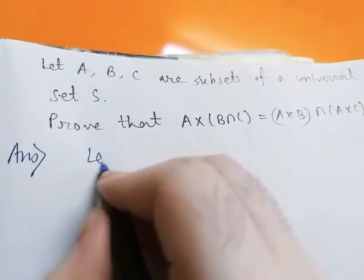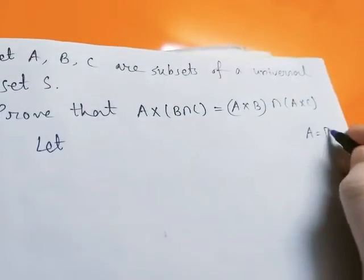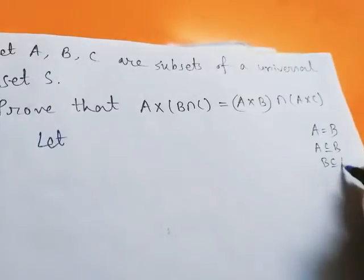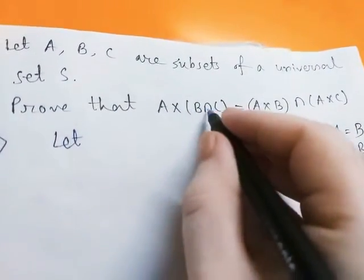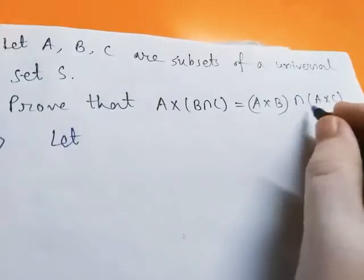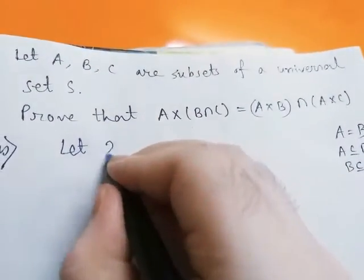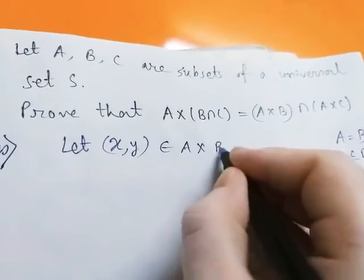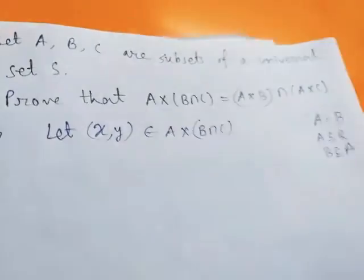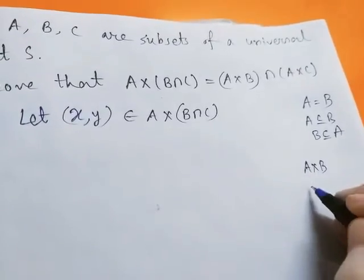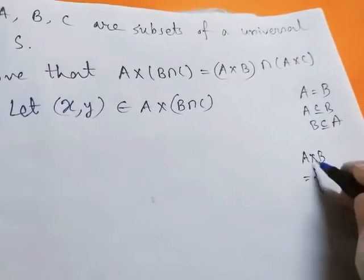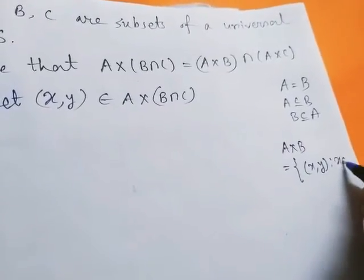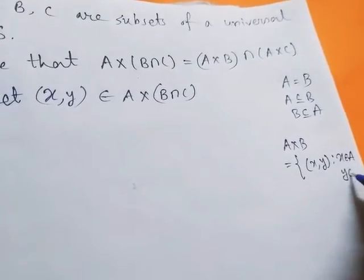To show two sets are equal, we have to show A subset of B and B subset of A. To show A cross (B intersection C) is a subset of (A cross B) intersection (A cross C), let ordered pair (x, y) belong to A cross (B intersection C). We know the Cartesian product of two sets A and B is defined by ordered pair (x, y) such that x belongs to A and y belongs to B.